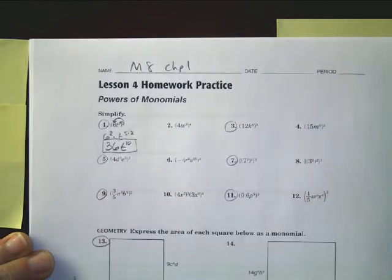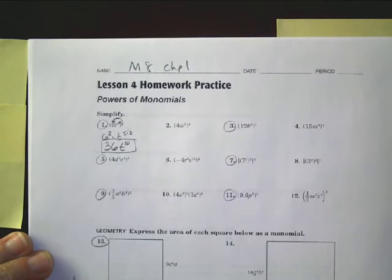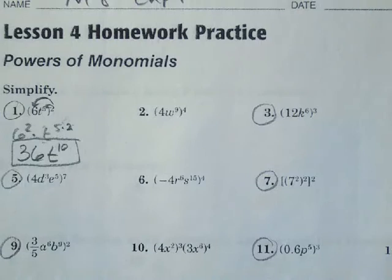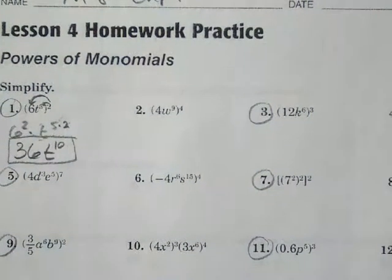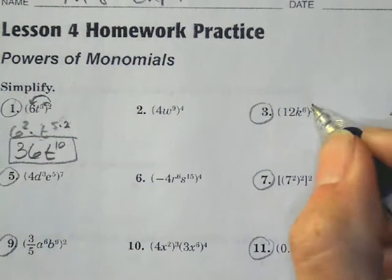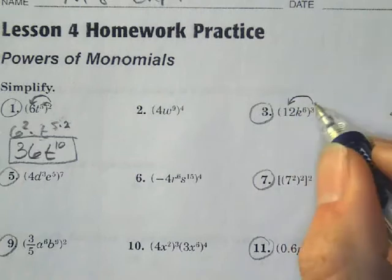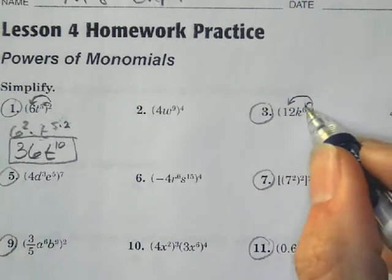We're going to look at number 3 here. Again, we're going to look at number 3. I'm going to zoom in a little more because it's just not quite clear enough. That looks a little better. Number 3, we're going to take our 3 and we're going to distribute over here. This becomes 12 to the 3rd power, and this becomes k to the 6 times 3 power.